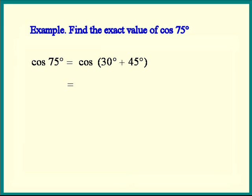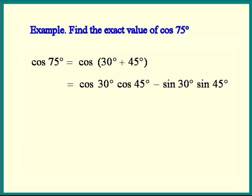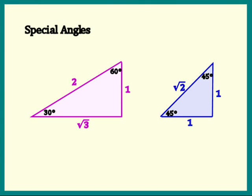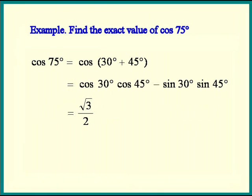So we get cosine 30 times cosine 45 minus sine 30 times sine 45. I hope all of you memorized those trig values from my first trig lesson. Whenever we forget, just draw the two special triangles: the 30-60-90, which is half of an equilateral triangle with sides 2, and the 45-45-90 isosceles triangle with sides 1. With these two special triangles we find all the values we need: cosine 30 is √3/2, cosine 45 is √2/2, sine 30 is 1/2, and sine 45 is √2/2.